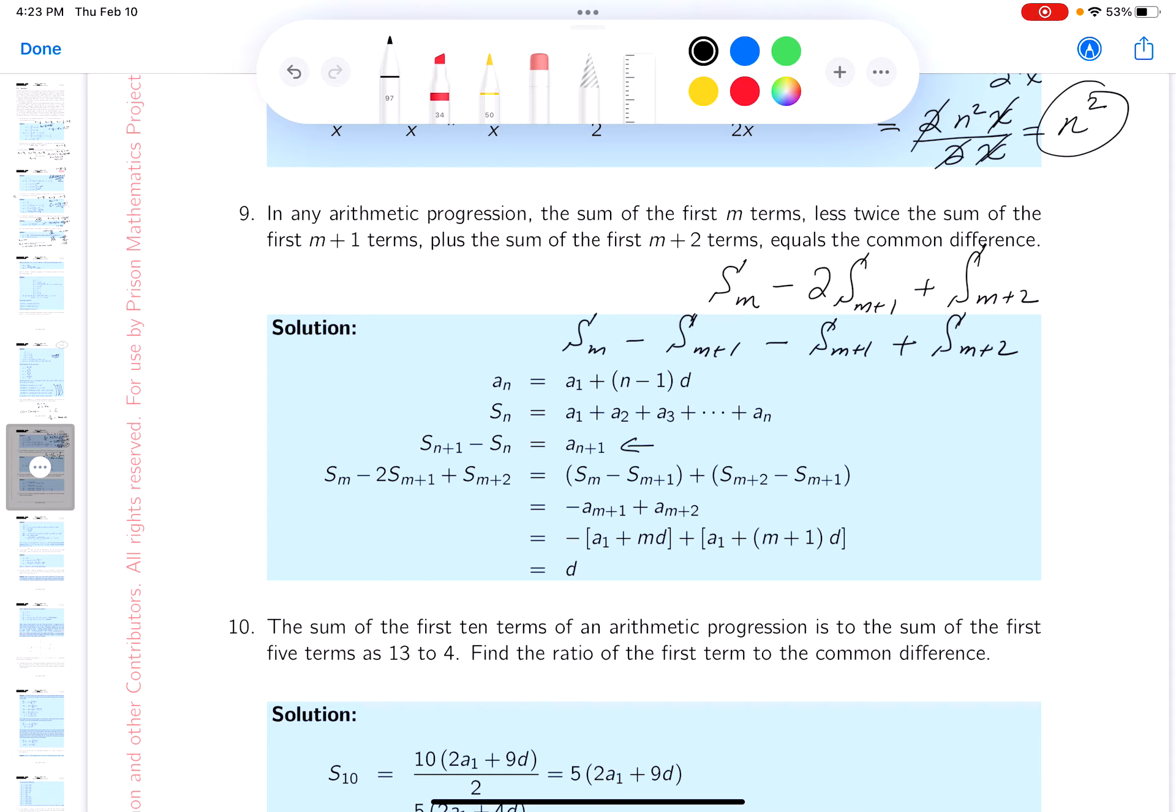It's going to be S_m minus S_{m+1} minus S_{m+1} plus S_{m+2}. I'm looking at this thing and I'm going to try to rewrite it so it looks more like the expression we had. Let me see if I can do that. I'm going to take this and write it a little bit differently. I'm going to write it as S_{m+2} minus S_{m+1}, that's these two terms here, and then minus S_{m+1} minus S_m.